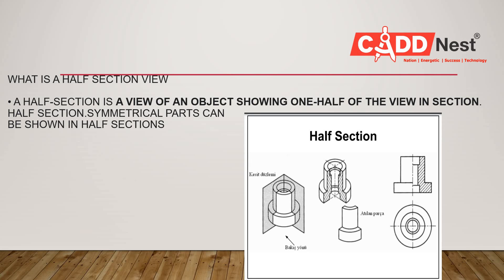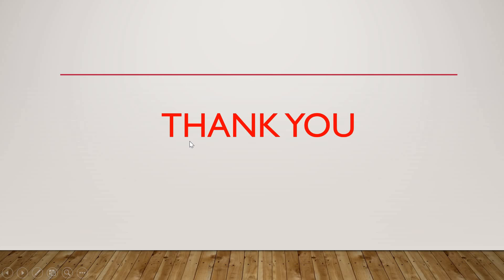A half section is an object view showing one half of a section, and the symmetric part can be shown in a half section view. The half section view has a line drawn along the line of symmetry. For example, here is a shaft — the shaft is the cut portion shown in the half section. This half section view shows a symmetric part in the half section view.